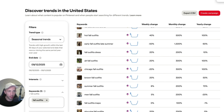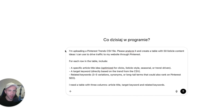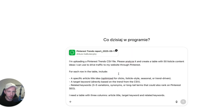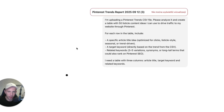Then you will go to ChatGPT and use my prompt — I'm going to leave it in the description. It says: 'I'm uploading a Pinterest Trends CSV file. Please analyze it and create a table with 50 listicle content ideas I can use to drive traffic to my website through Pinterest.' If you don't want to use listicles, just delete that word. For each row, include a specific article title idea optimized for clicks, a target keyword directly based on the trend from the CSV, and related keywords — three columns: article title, target keyword, and related keywords. Paste the file and press enter.